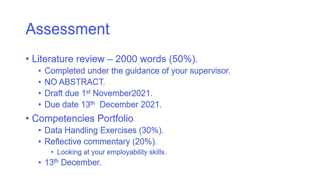The literature review is 2,000 words, worth 50% of the module mark, completed under the guidance of your supervisor. There should not be an abstract — if you've only got 2,000 words, wasting words summarizing what you're going to write next is not useful. You should produce a plan of your literature review by the 1st of November. This needs to be about 300 words sketching out what you're going to cover, to make sure you've understood your topic area, because in the past students have written reviews that didn't cover the expected material and received very low marks.